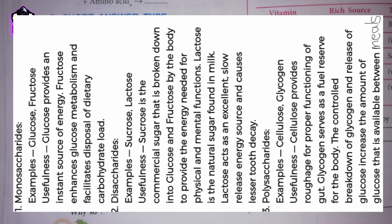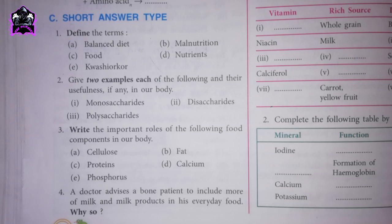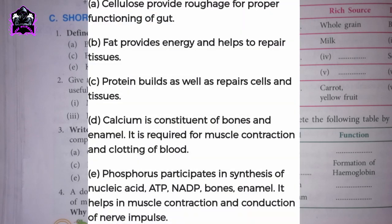The controlled breakdown of glycogen and release of glucose increases the amount of glucose available between meals. Question: write the important roles of the following food components in our body. A. Cellulose: provides roughage for proper functioning of the gut. B. Fat: provides energy and helps to repair tissues. C. Protein: builds and repairs cells and tissues. D. Calcium: is a constituent of bones and enamel; required for muscle contraction and clotting of blood. E. Phosphorus: participates in synthesis of nucleic acid, ATP, NADP, bones, and enamel; helps in muscle contraction and conduction of nerve impulse.